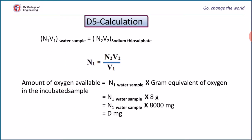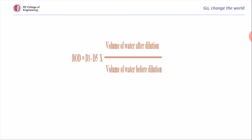Similarly, you can calculate the dissolved oxygen in the water sample for the incubator sample, that is D5. Once you calculate both D1 and D5, we can calculate the BOD of the water sample by using this relation: (D1 minus D5) multiplied by volume of water after dilution divided by volume of water before dilution.